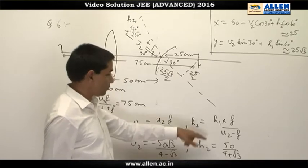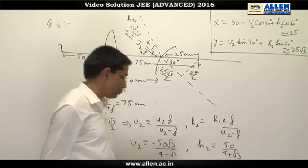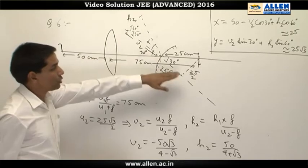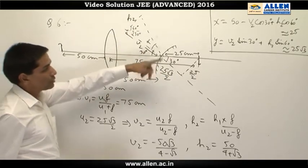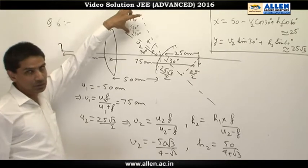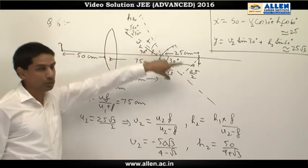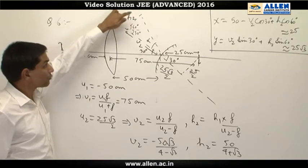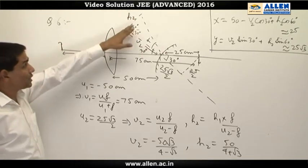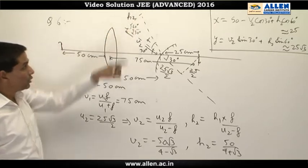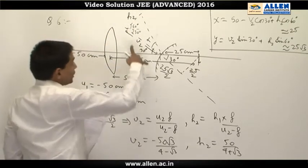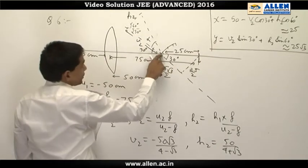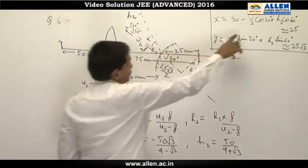h₂ equals h₁ into f upon (u₂ minus f) using the magnification formula. Height of this image comes out to be 50 upon (4 plus √3). This is a virtual object and real image. Virtual object real image is always an erect image. To find the x coordinate of this image, x coordinate is given by 50 minus v₂ cos 30 degrees.